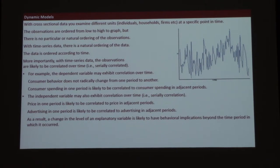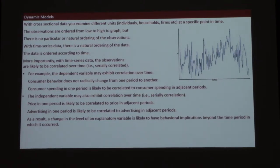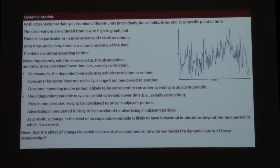Here's the important part: changes in the level of an explanatory variable are likely to have results that carry over into future periods. In cross-sectional data we assume what happens at one point in time is independent from another, but with time series data it makes sense to have memory. We remember advertisements; we remember things going on sale. So if advertising has more than a one-period effect, how do I account for advertising from last period, two periods ago, three periods ago?